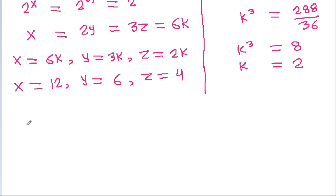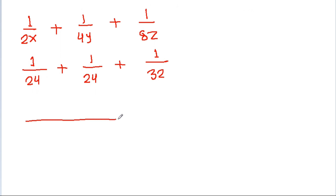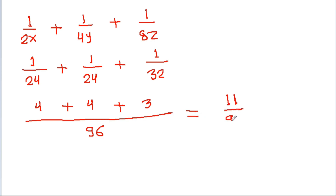And we have to find the value of 1 by 2x plus 1 by 4y plus 1 by 8g, and it will be 1 by 2 times 12 which is 24, plus 1 by 4 times 6 which is 24, plus 1 by 8 times 4 which is 32. Taking 96 as the LCM, we get 4 plus 4 plus 3, that will be 11 by 96.